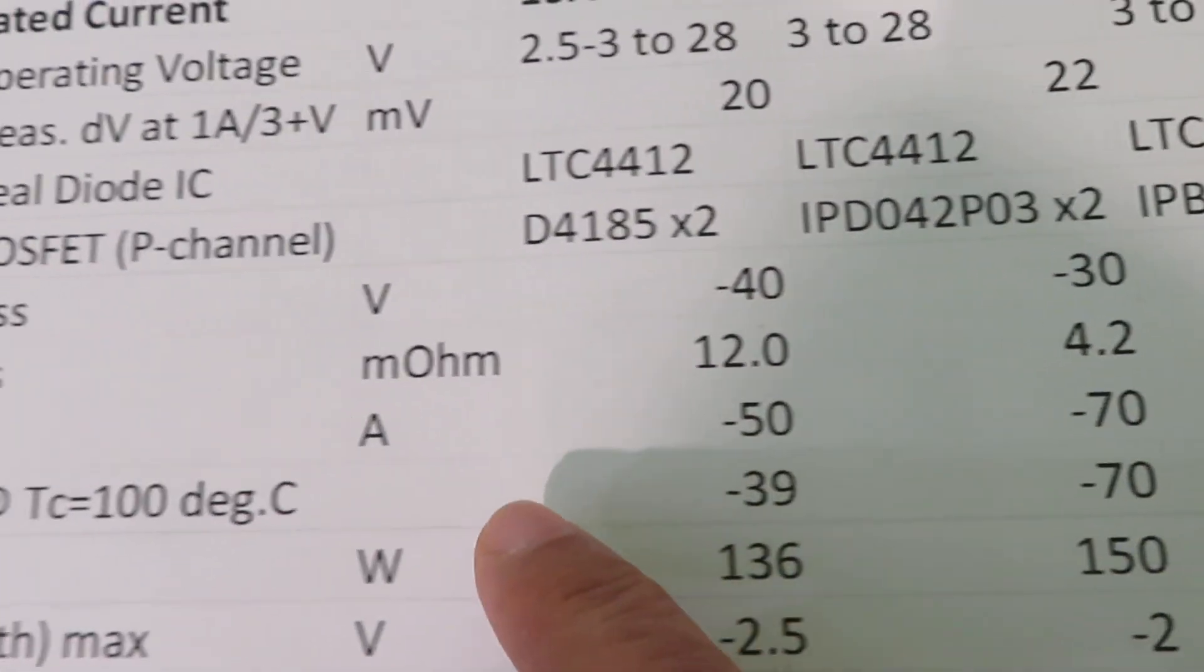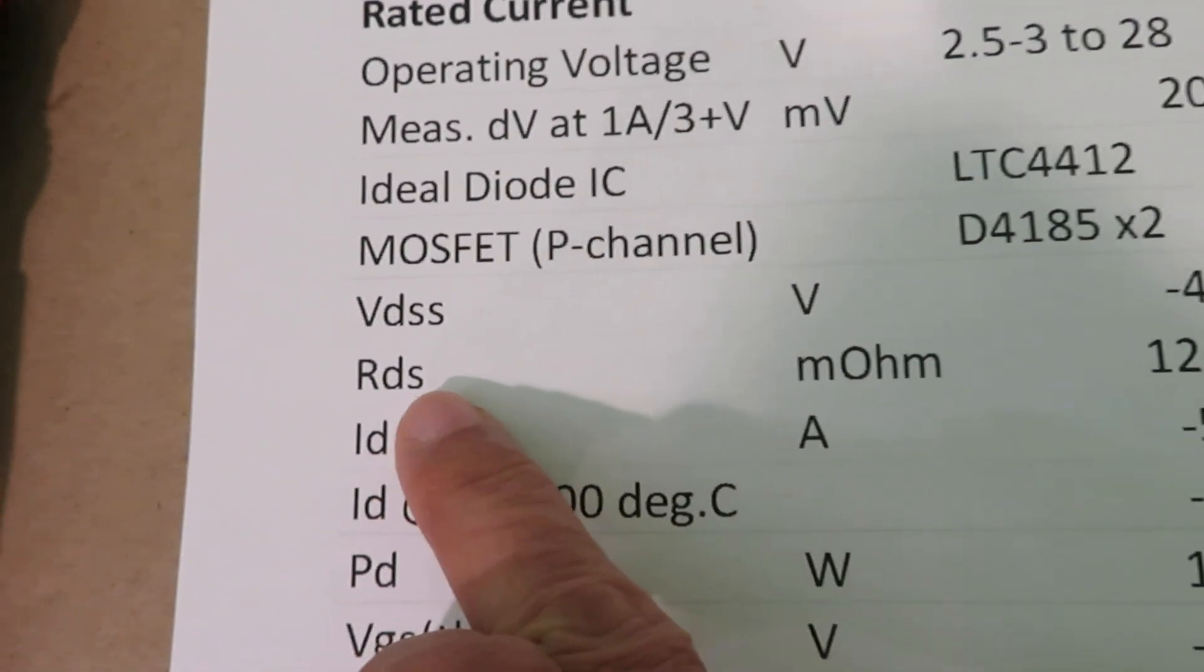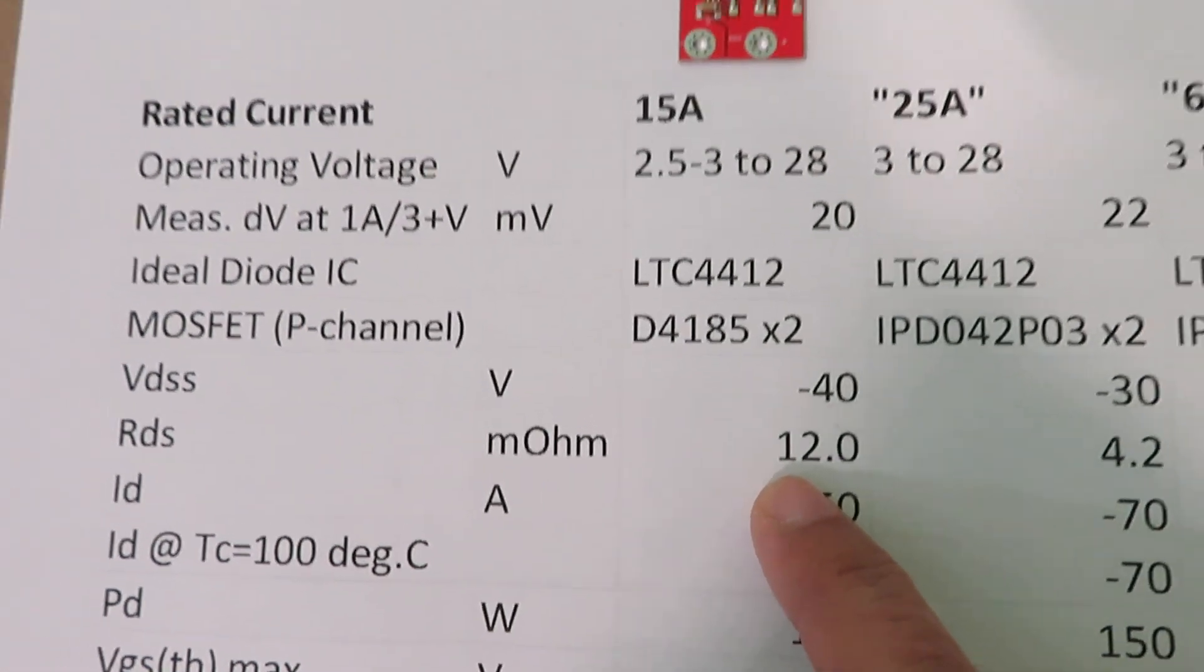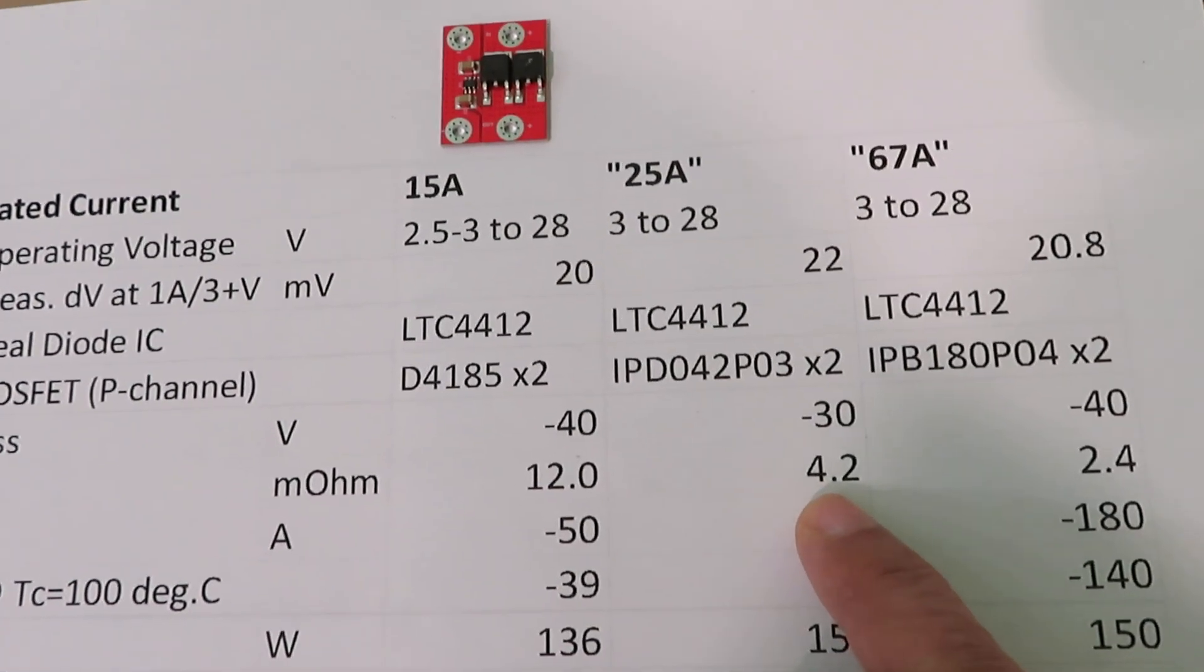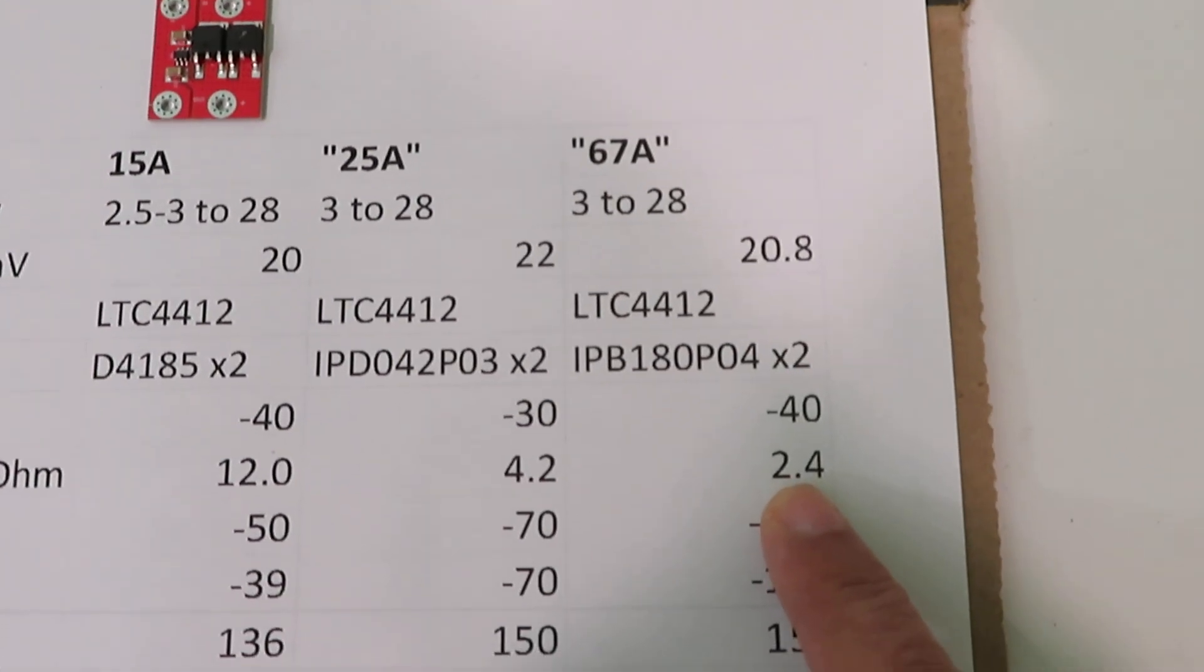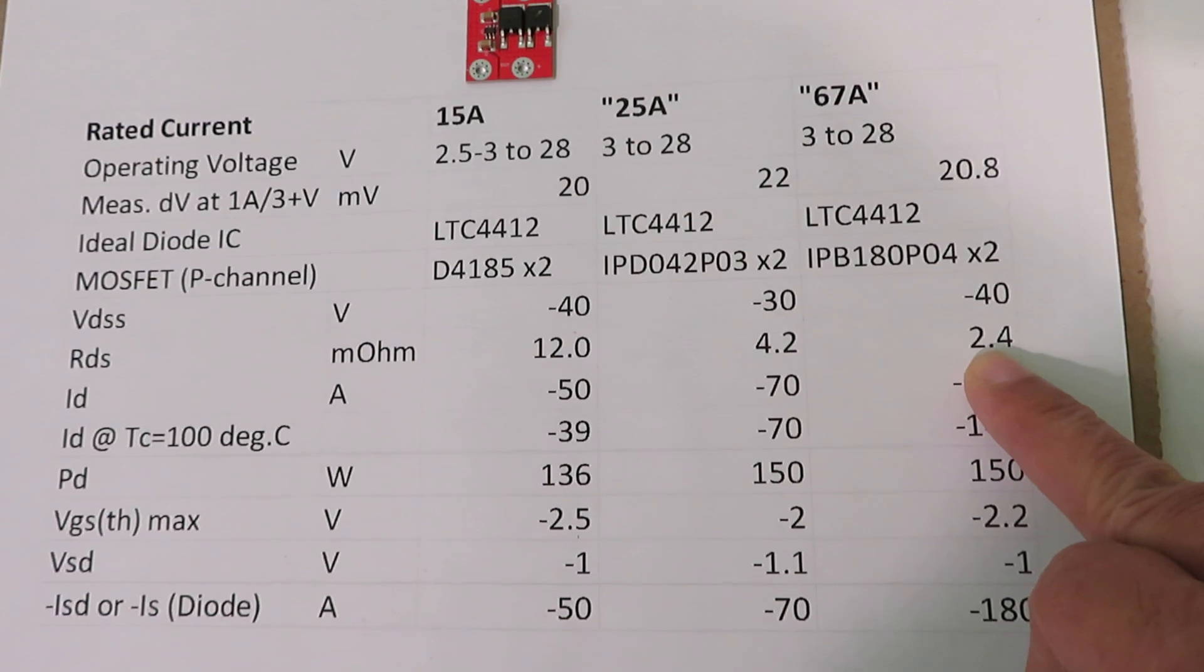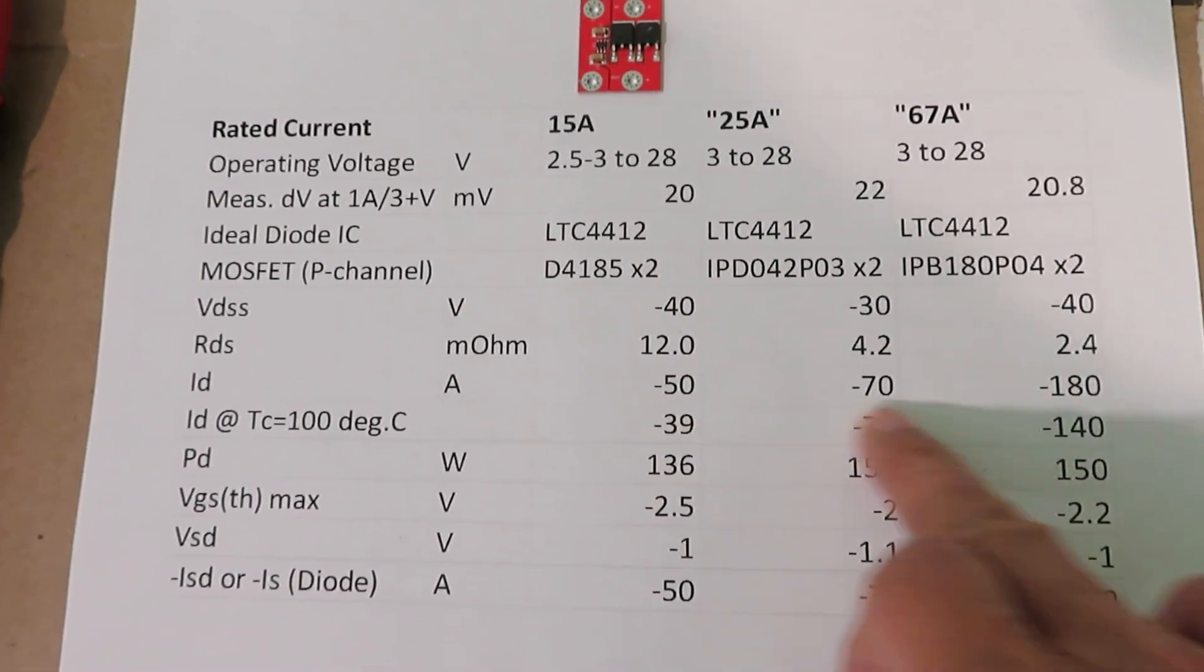If you look at the characteristics, the most important thing is the drain-to-source resistance in milliohms. The off-the-shelf one is 12 milliohms, the next one I used was 4.2, and this one is 2.4. This is probably the lowest resistance MOSFET that's not expensive, so I could afford it. The rest of the specs are very similar.